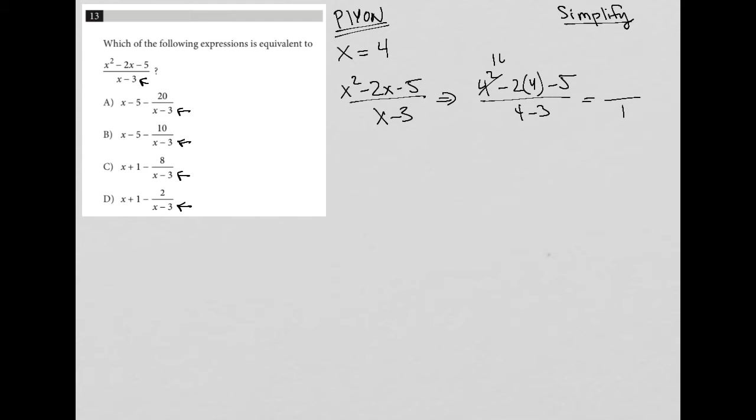4 squared is 16. 2 times 4 is 8, so it becomes minus 8. 16 minus 8 is 8. And then minus 5, 8 minus 5 is 3. So I end up with 3 over 1 or just 3. So basically what I'm saying is when x equals 4, the solution to my question is 3.